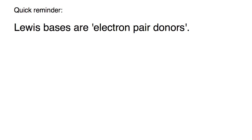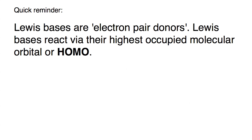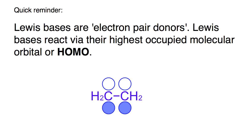Quick reminder: Lewis bases are electron pair donors. For example, water with its lone pair of electrons — this can be shown with a curly arrow going from the lone pair, where a curly arrow represents the movement of an electron pair. Likewise ammonia with its curly arrow. Lewis bases react via their highest occupied molecular orbital, or HOMO. This is often seen with alkenes, which have a molecular orbital pi system, and a curly arrow goes from the electron-rich pi system.